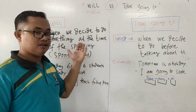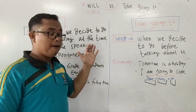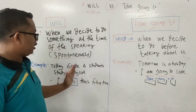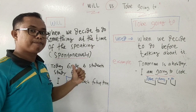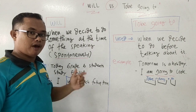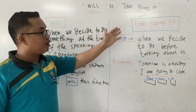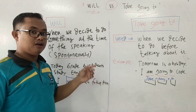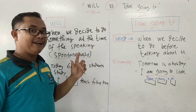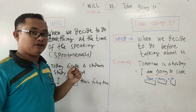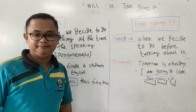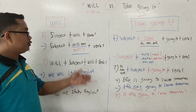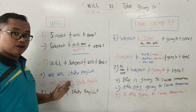Now let's look at how to use 'will' in positive, negative, and interrogative sentences — and likewise for 'to be going to.' Let's continue to the sentence formula. Now let's see here, we use 'will.'